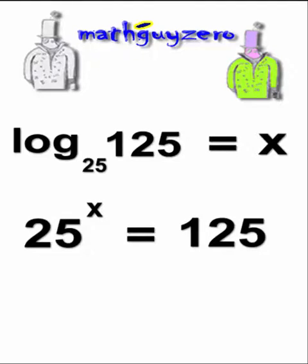It's not always a big number, sometimes it's a small number. But now, the bases are not the same. We know 25 is the same as 5 squared.